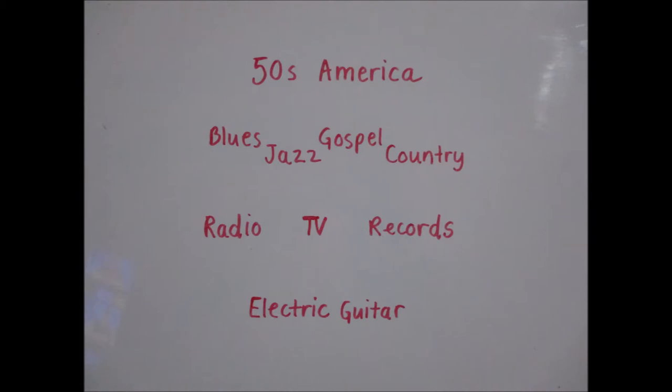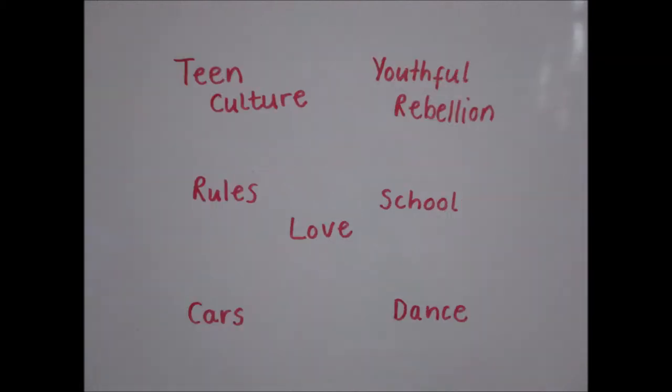Rock and roll was born in 1950s America. It has roots in blues, jazz, gospel and country. It really took off with radio, TV and record sales, and is most famous for the electric guitar. Rock and roll is all about teen culture and youthful rebellion. Song lyrics are usually about rules, love, school and cars, and rock and roll music was made for dancing. Here are just a couple of examples of rock and roll music that you might recognise.